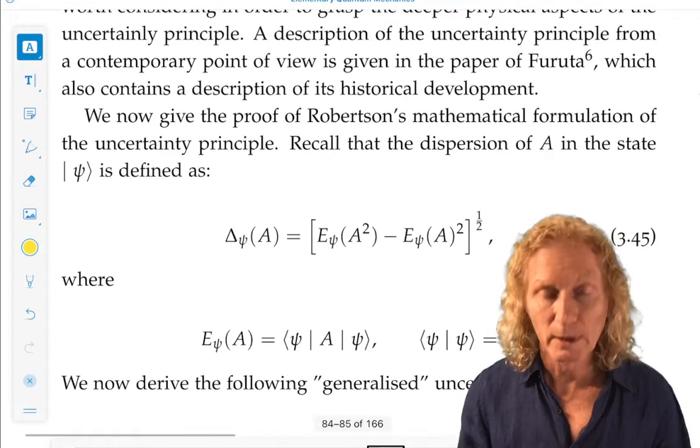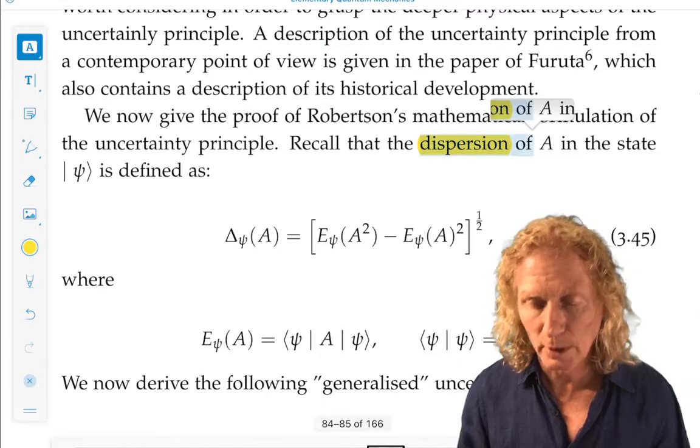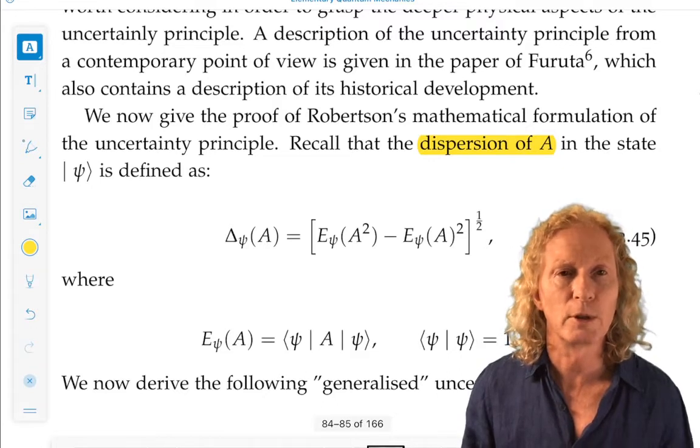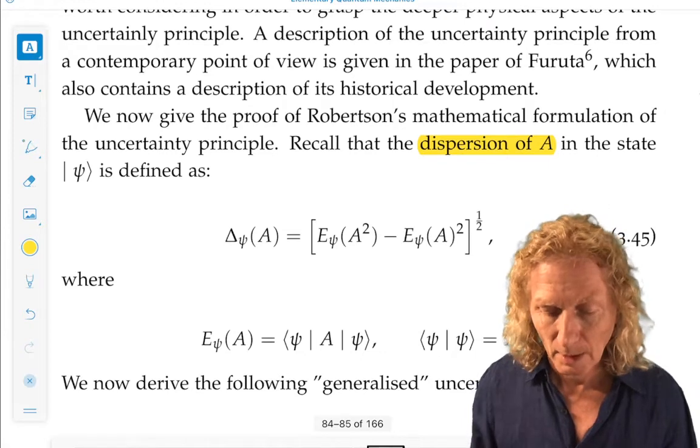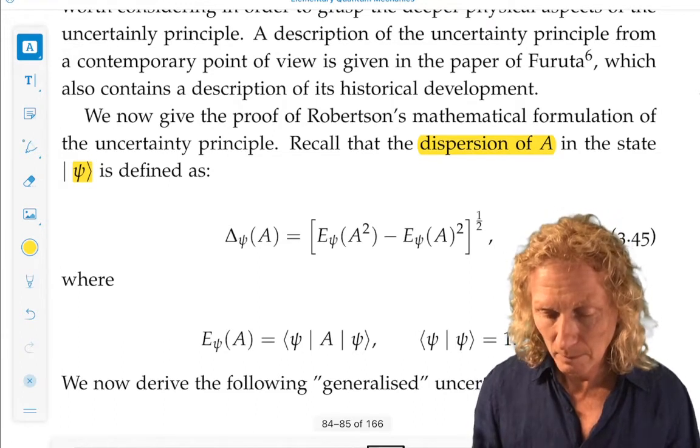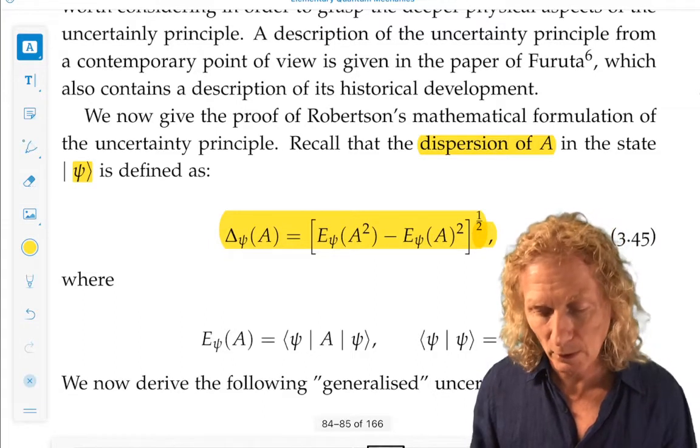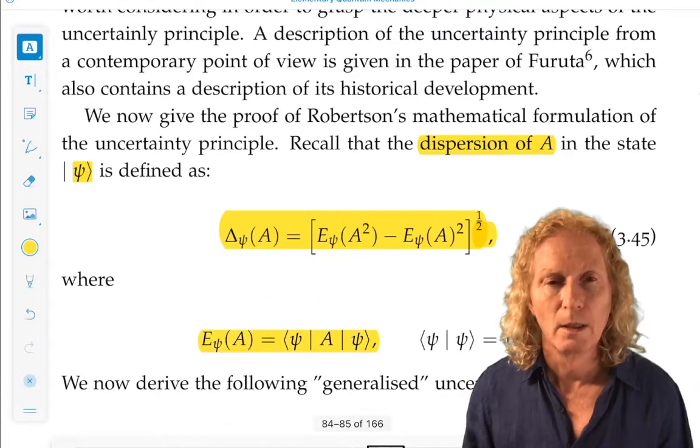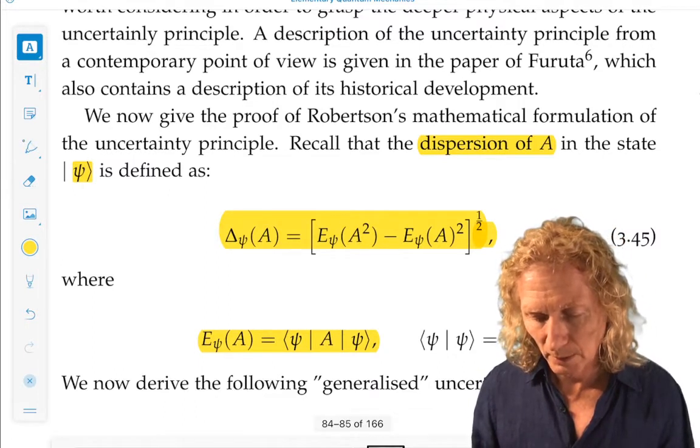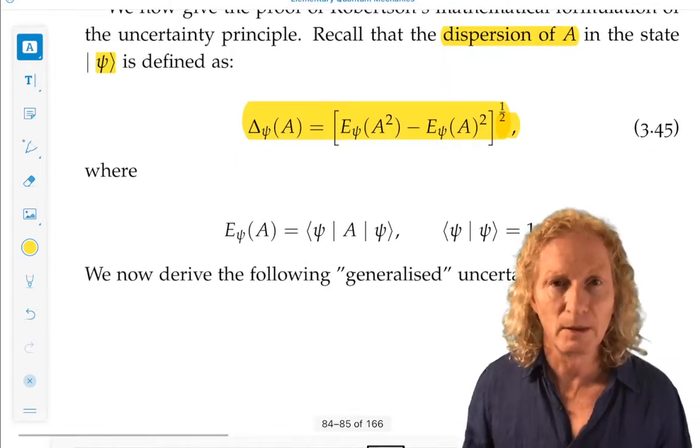Well, the first thing we need to get straight is what we mean by uncertainty in a measurement. And we're going to quantify that through the notion of the dispersion of an operator. Self-adjoint operator is what we're going to be considering in the state psi. Dispersion is quantified within a specific state. So, remember, the dispersion of an operator in the state psi is a standard deviation, where E sub psi is the expectation value of whatever is in the argument. In this case, A, expectation value of A in the state psi. And in Bracket notation, it has this form which we've looked at over and over, and the states are always going to be normalized. And that is used when you derive this principle.